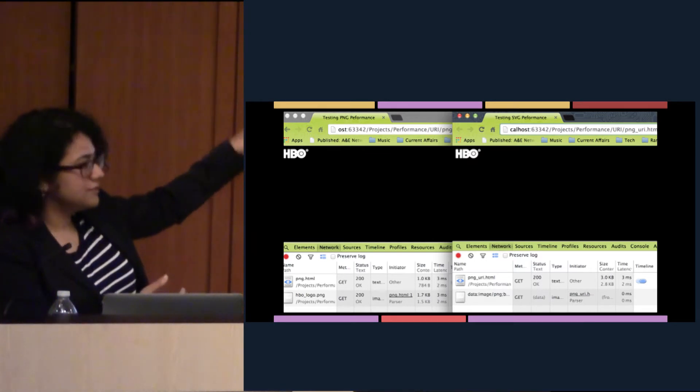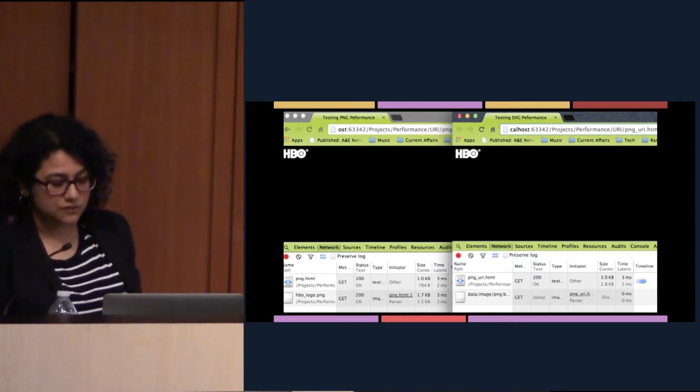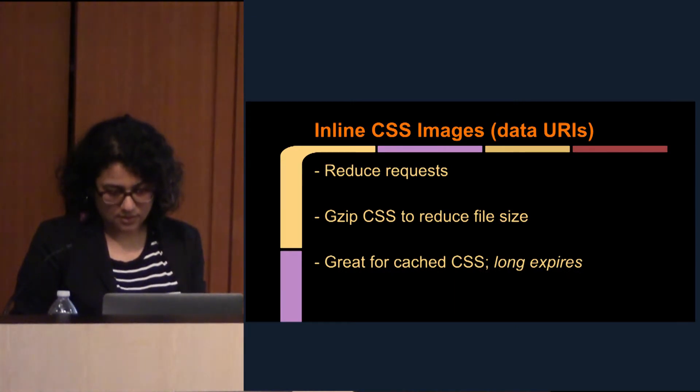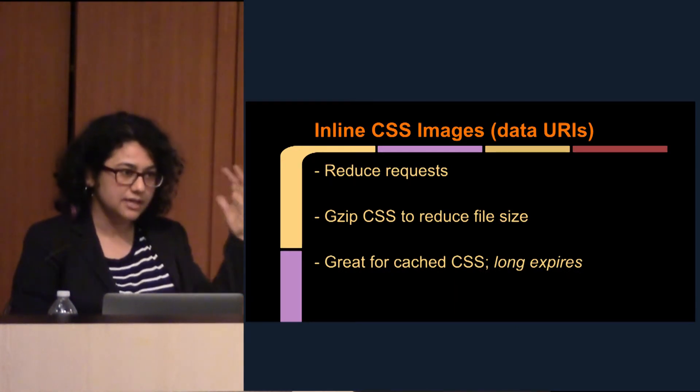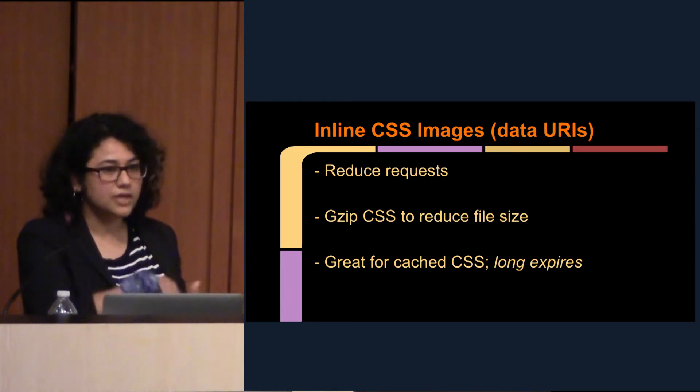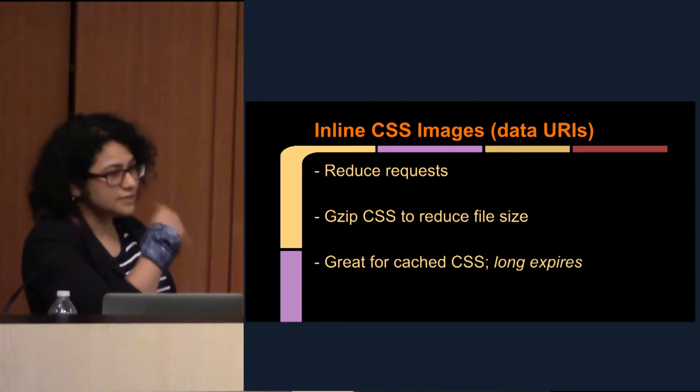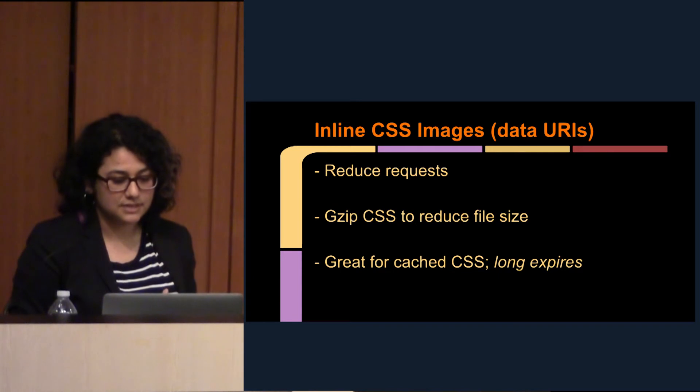I ran another test. With a regular PNG you had two resources, about three milliseconds each. With the inline version, because the HTML is gzipped and is smaller, it compares favorably with the original HTML that had the PNG, and there's no extra cost for the PNG itself because it's embedded. The other really good thing is that because the image is in your CSS, and CSS is cached, you can set long expires on your CSS — keeping it in the browser for two or three days — which makes it even faster.